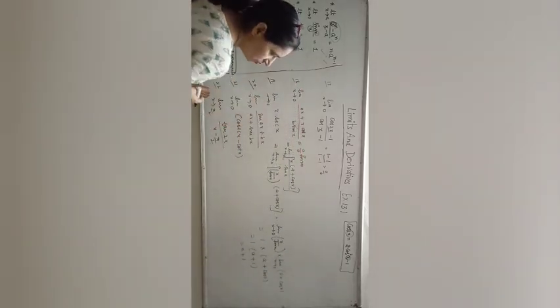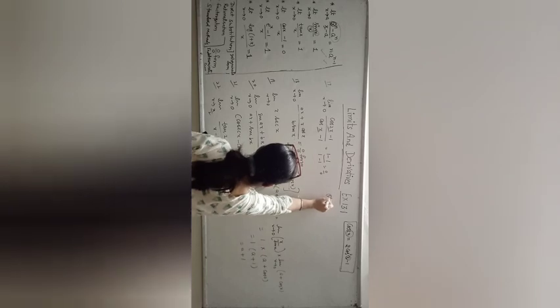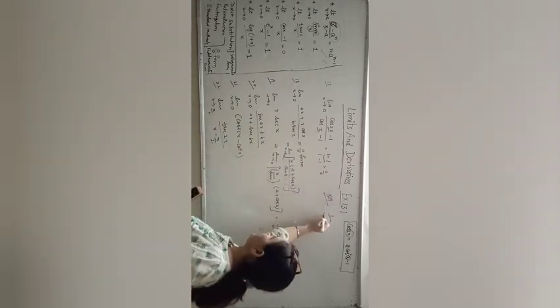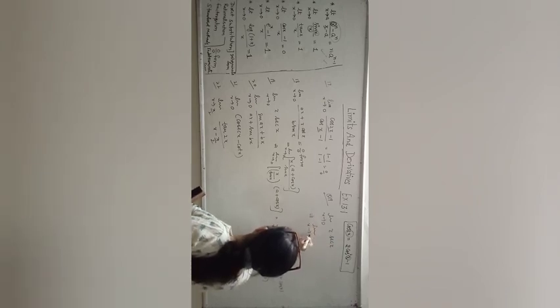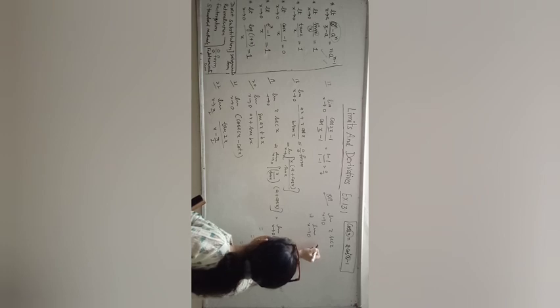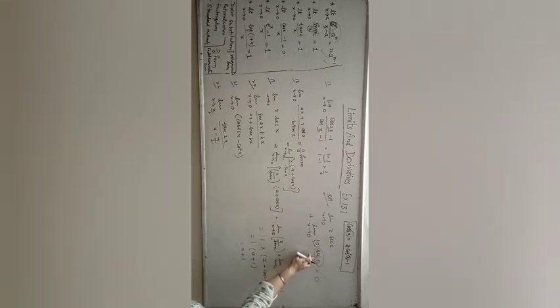Question 19: limit x→0 of x·sec(x). Putting x=0: x=0 and sec(0) = 1. So 0 times 1 = 0. This is not indeterminate — direct substitution gives the answer 0.